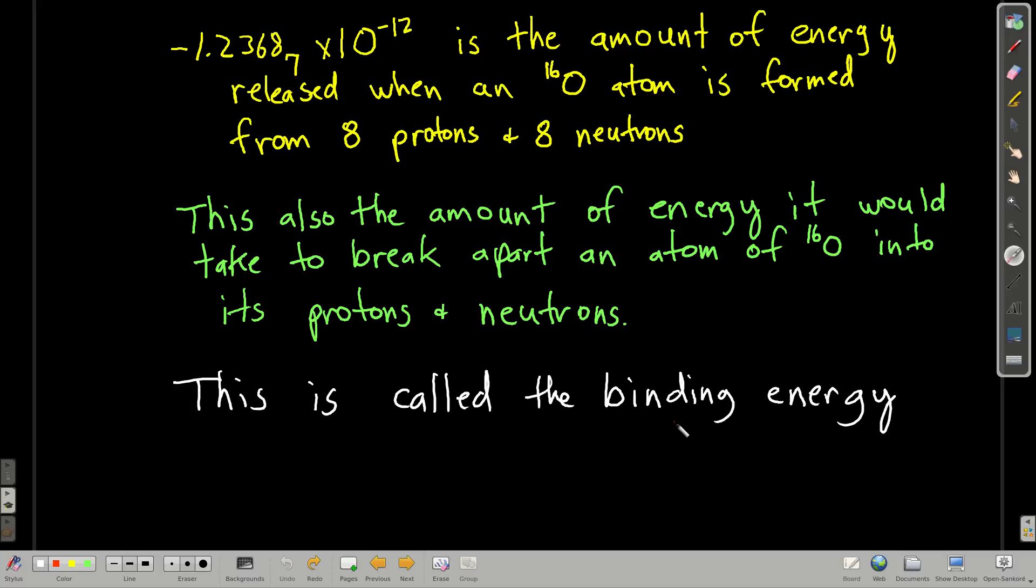This is called the binding energy. It's the energy that's holding that nucleus together, right? Because, protons all have positive charges, so they're repelling each other. Neutrons don't have any charge. There's something else holding it together. But the binding energy is how much energy that is.